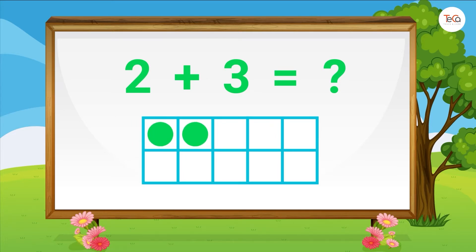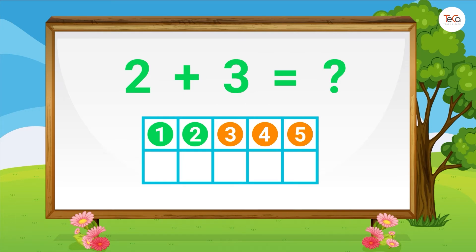Draw 2 dots, then 3 dots, then count all the dots to find the sum. Here we have 1, 2, 3, 4, 5. 5 dots in total. Therefore, 2 plus 3 equals 5.